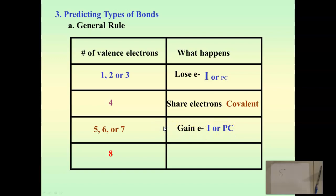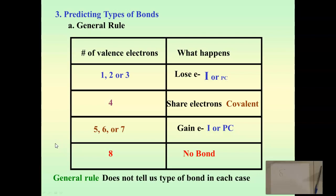And finally, if you have eight valence electrons, you're a noble gas — you don't need to bond because you've got your complete octet. But as you can see, this is a general rule. It doesn't tell us specifically what type of bond — ionic or polar covalent — or when it happens to be nonpolar covalent. We need to use a slightly different method to figure out what type of bonding there is.